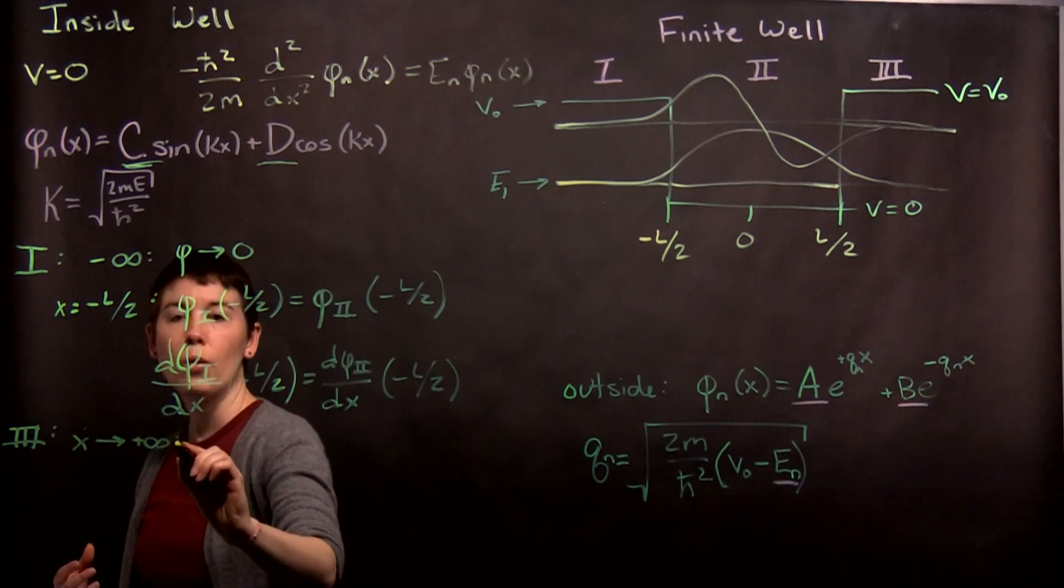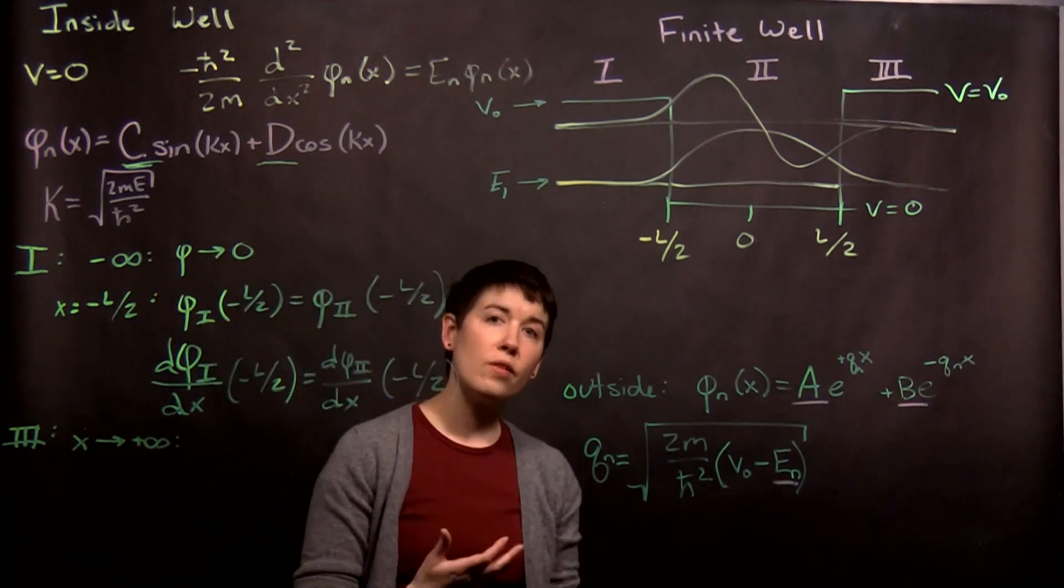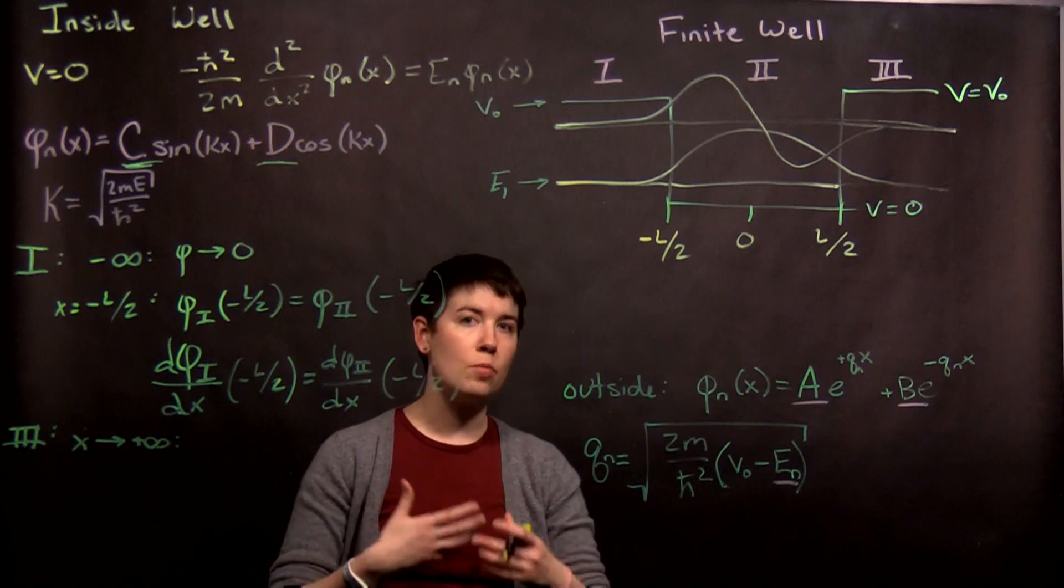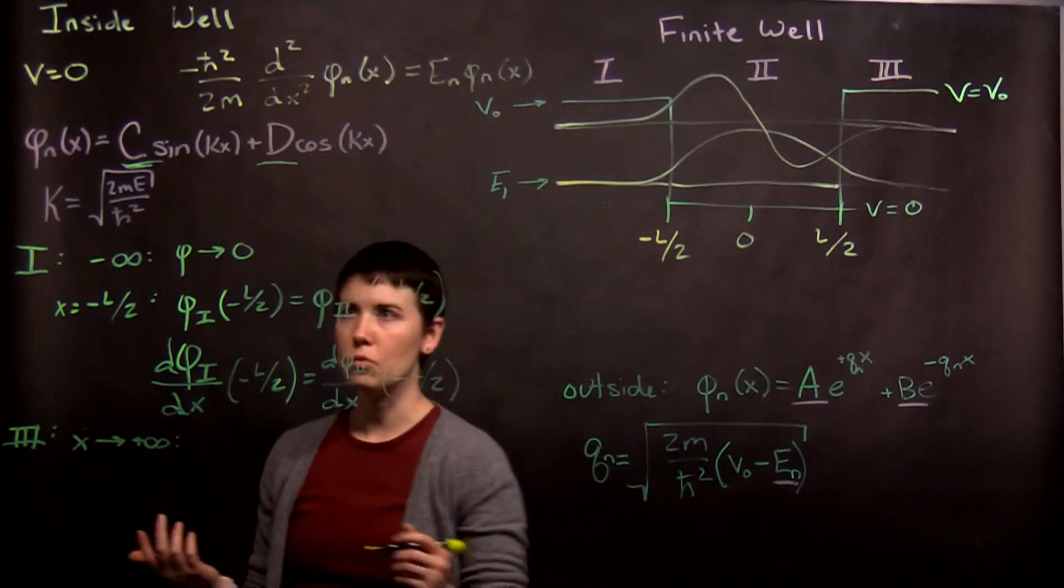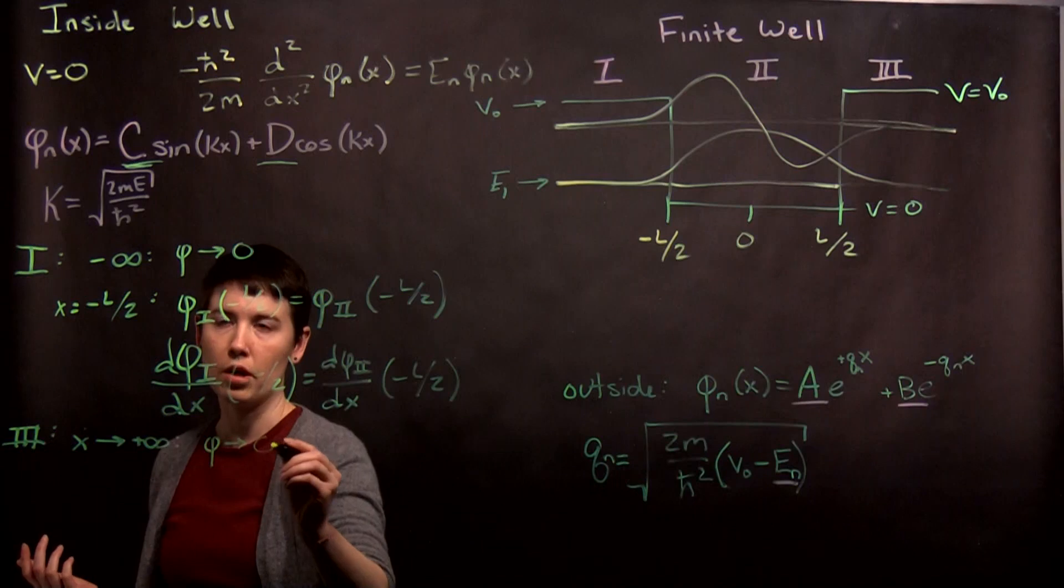I can write it the right way, I promise. What happens there? Well again, our wave function needs to go to zero. This needs to be a wave function that is normalizable. So, our wave function goes to zero.